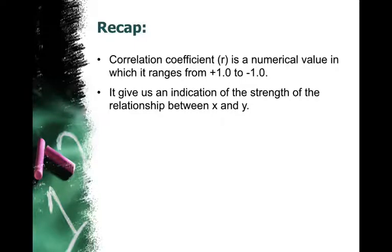The closer that r is to either positive 1 or negative 1, the stronger the relationship is going to be. The closer to 0, the weaker the relationship will be. What we want to do is look at some scatterplots and connect them to the correlation coefficient.